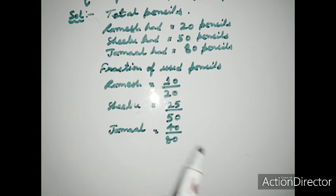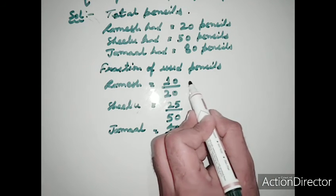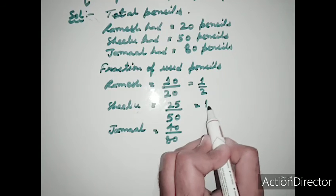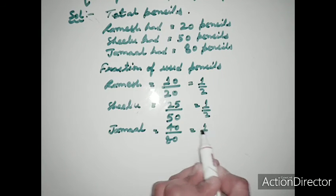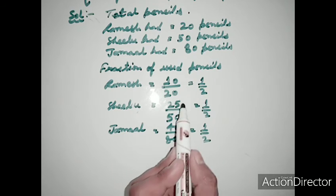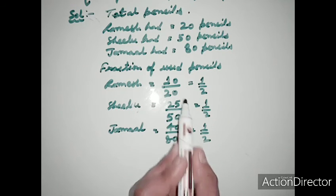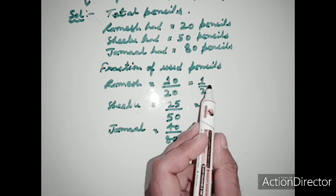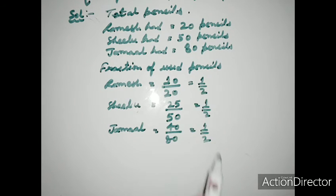If we reduce all these fractions to simplest form, we get 1 upon 2 for each: 10 upon 20 simplifies to 1 upon 2; 25 upon 50 simplifies to 1 upon 2; and 40 upon 80 simplifies to 1 upon 2. All fractions have the same value.